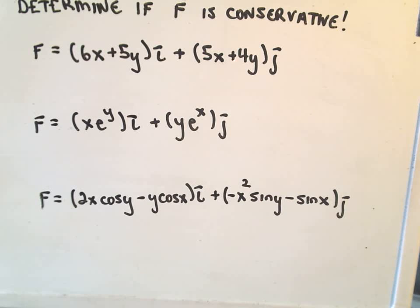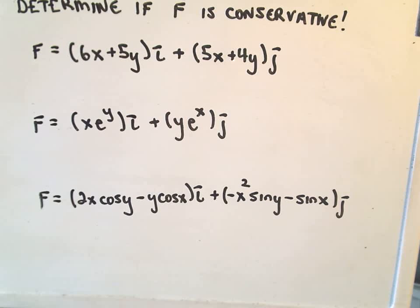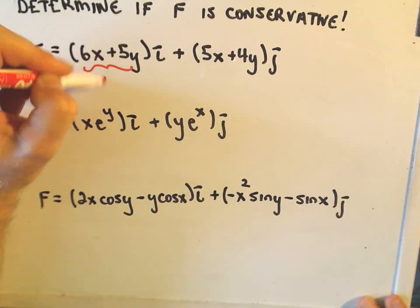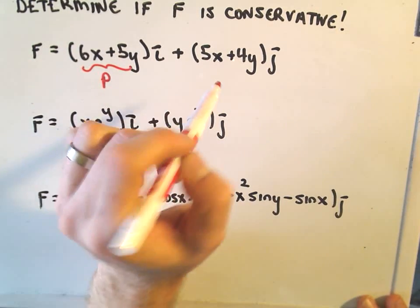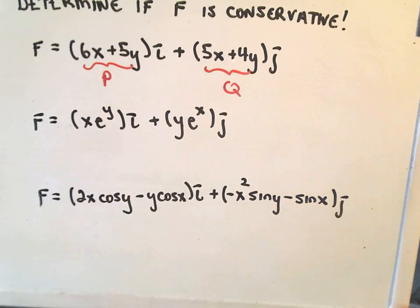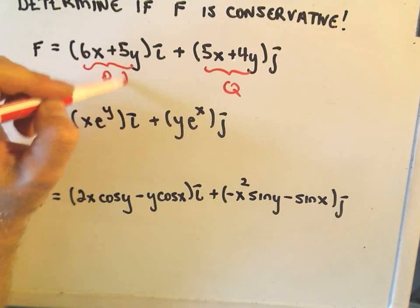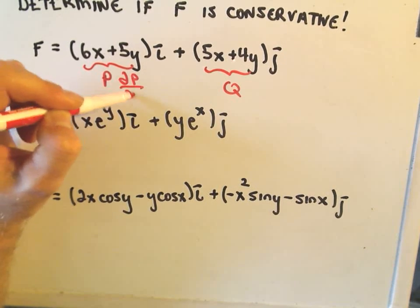But again, R² is simply connected, so I've got three problems here. Let's assume that we're just looking at these on all of R², and we just want to know if they're conservative or not. So again, it says the part in front of the I part, that's what we call P, the stuff in front of the J part, that's what we label as Q, and it says we take the partial of P with respect to Y.